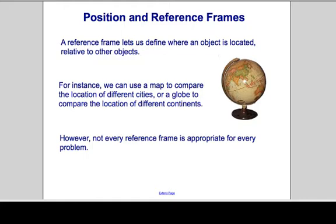Position and reference frames. A reference frame is something that allows us to where an object is defined in relation to each other. For instance, when we use a map, we compare different cities compared to where we are on the map. However, we don't need this for every problem. It's particularly useful in some problems where we have to pay attention to a direction.